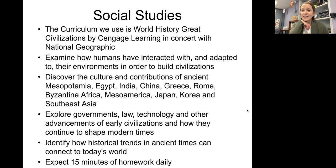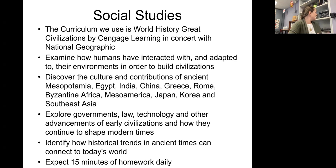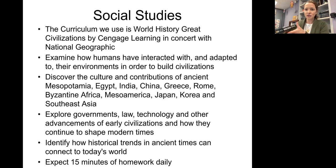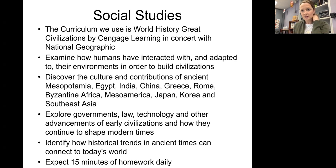For social studies, sixth graders in the entire state of Washington — so we're no exception here — study ancient civilizations. We use a world civilization book published by Cengage in cooperation with National Geographic. It's a great book that we have copies of in the room, and also as an online companion so students can access the text at any time via Schoology.